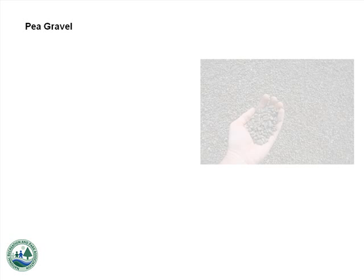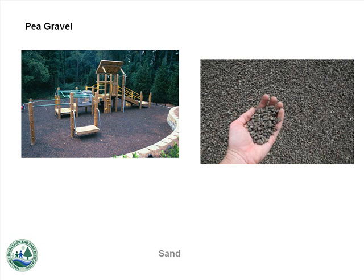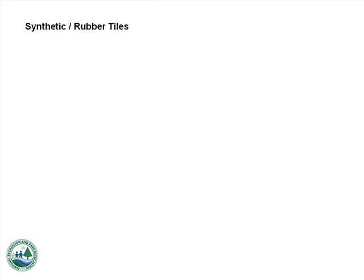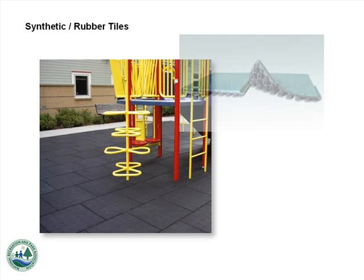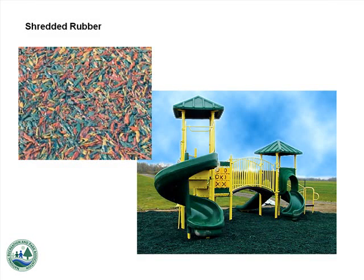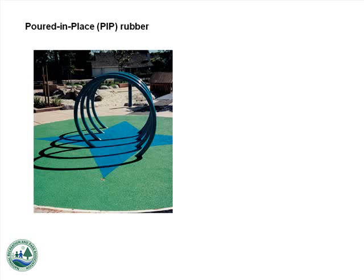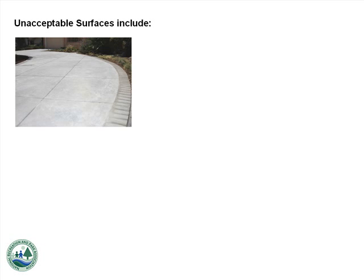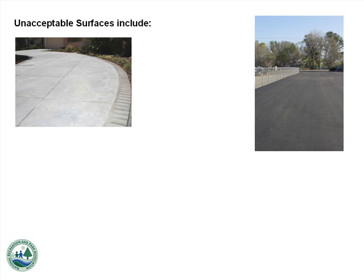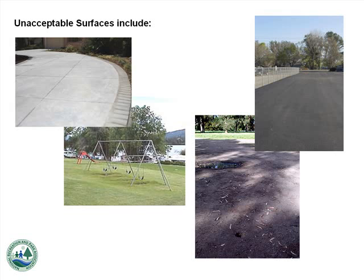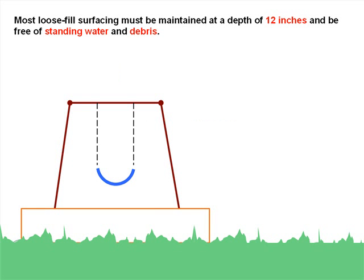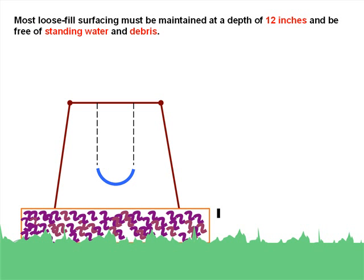Additional acceptable surfaces include pea gravel, sand, synthetic or rubber tiles, shredded rubber, mats, and poured-in-place rubber. Unsafe and unacceptable playground surfaces include concrete, asphalt or blacktop, packed earth, and grass. Most loose fill surfacing must be maintained at a depth of 12 inches and be free of standing water and debris.